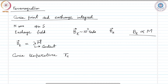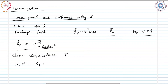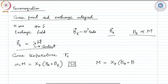Consider now the paramagnetic phase: an applied field B_A will cause a finite magnetization, and this in turn will cause a finite exchange field B_E. So B_A causes the magnetization and that causes B_E, since B_E and M are related. We can write, in SI units, mu_0 times M equals chi_P — the paramagnetic susceptibility — times the quantity B_A plus B_E. In CGS units, mu_0 goes away and we simply write M equals chi_P times the quantity B_A plus B_E.